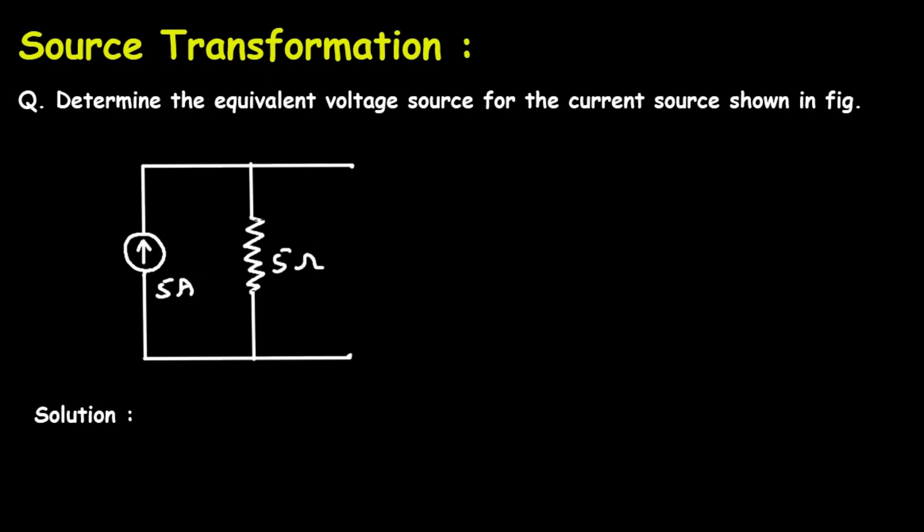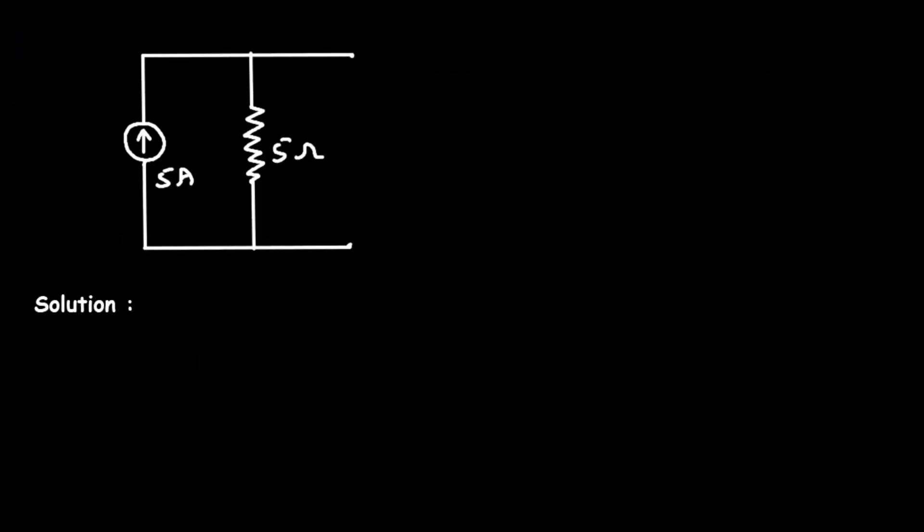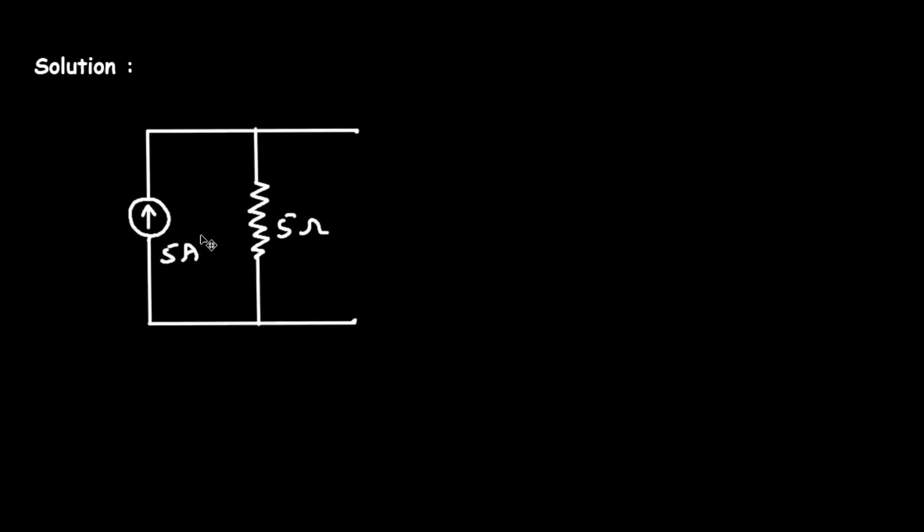So first of all, what we will do, we will take this circuit from here. Now, let's say this is terminal A and this is terminal B. Now next step, what we will do, we will convert this current source into its equivalent voltage source.